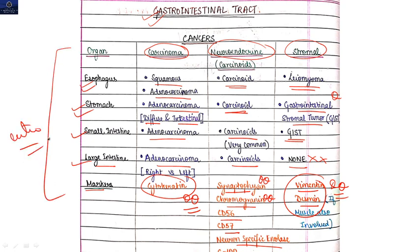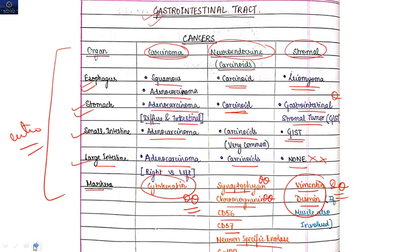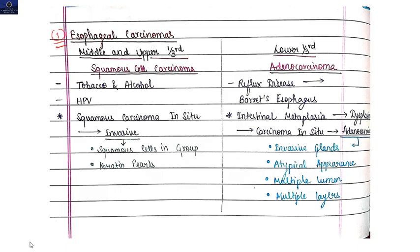So this is the basic intro about all the cancers of the GI tract. Let's move to the next part, coming to the first organ that is your esophagus. First we will focus on esophageal carcinoma.